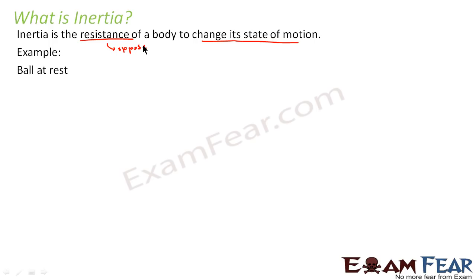So it means that the body opposes any change in its state of motion. State of motion means whether the body is at rest, moving with uniform velocity, or moving with decreasing velocity — those are all states of motion. So inertia means the body does not want to change its present state of motion. For example, if a ball is at rest, it will always tend to be at rest and will not like to change its state. So that is inertia.